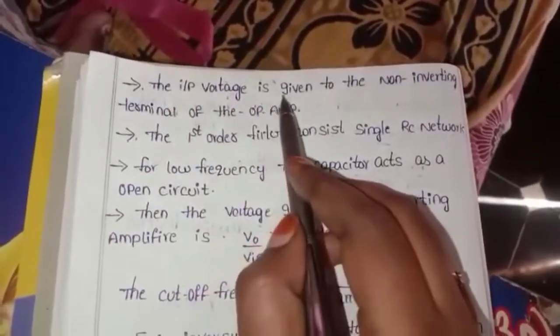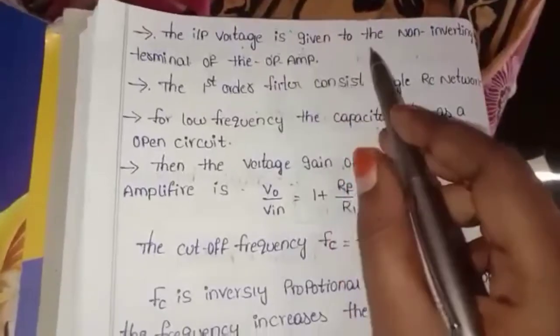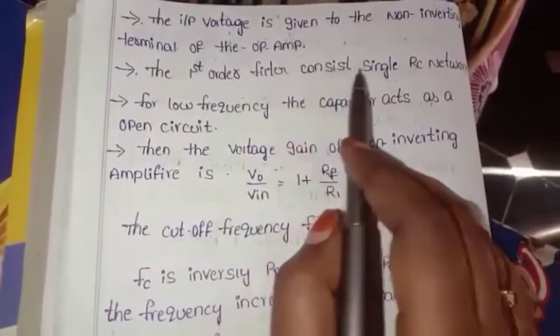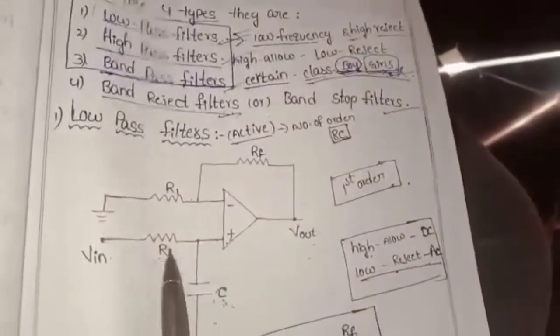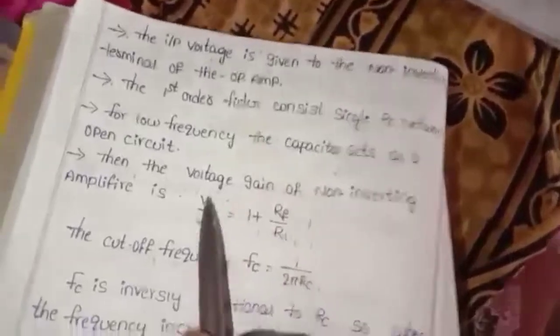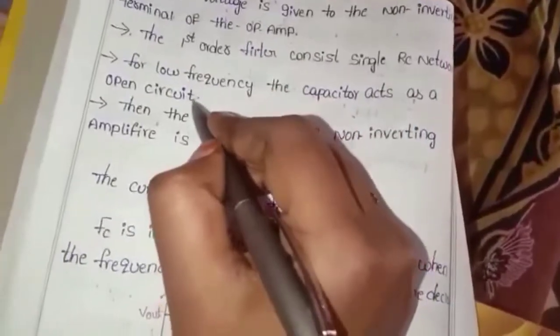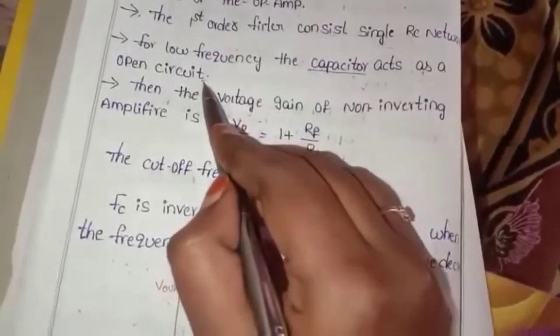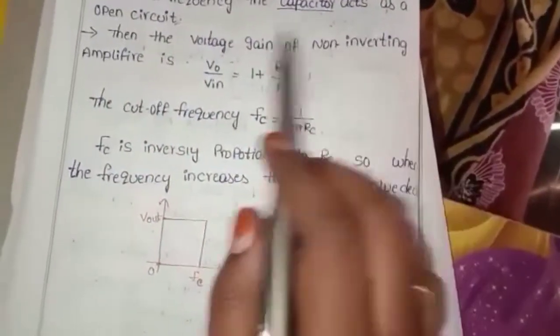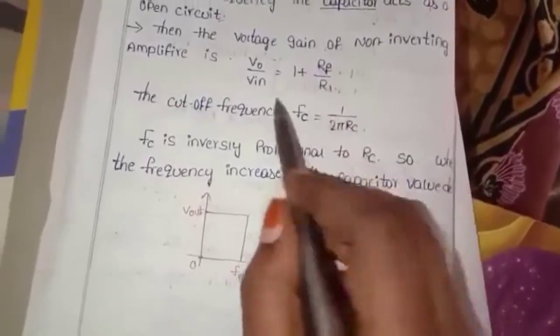Notes: The input voltage is given to the non-inverting terminal of the op-amp. The first order filter consists of a single RC network — one RC network is used. For low frequency, the capacitor acts as an open circuit. The voltage gain of the non-inverting amplifier is V0 by Vin equals 1 plus RF by R1.